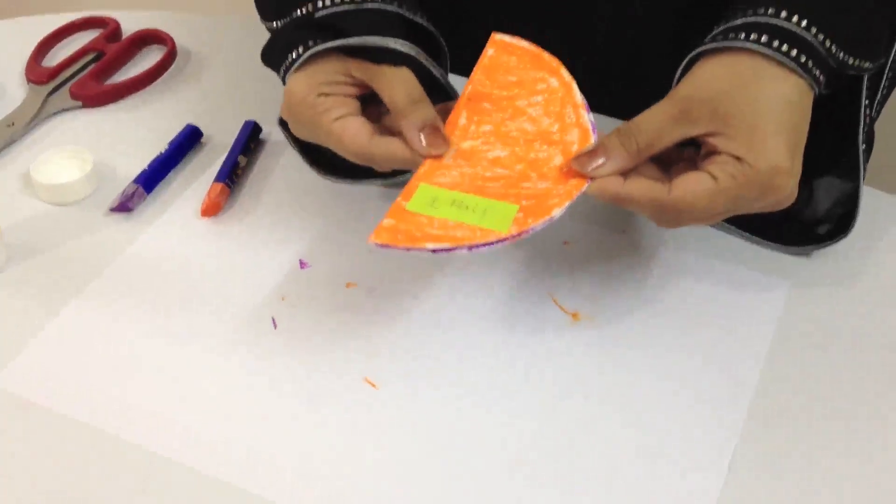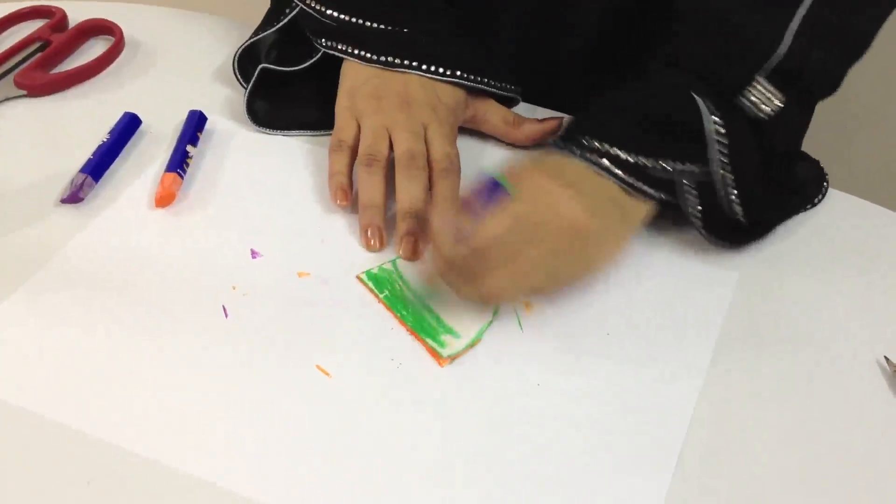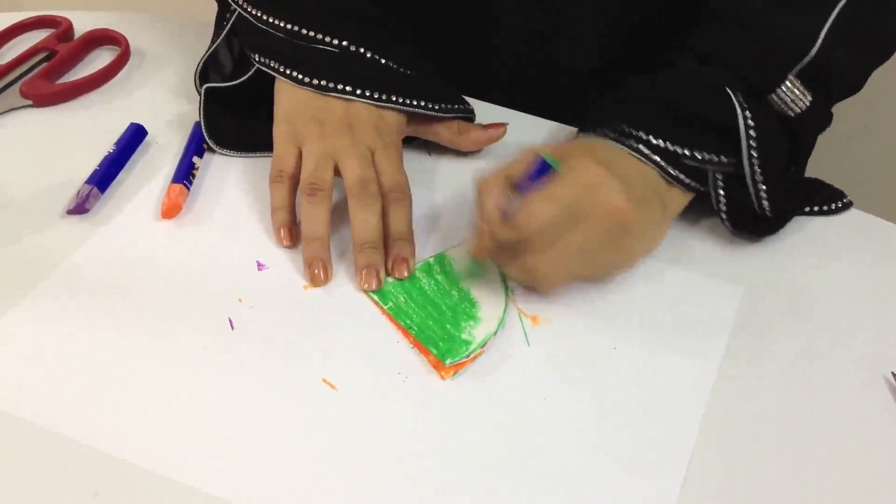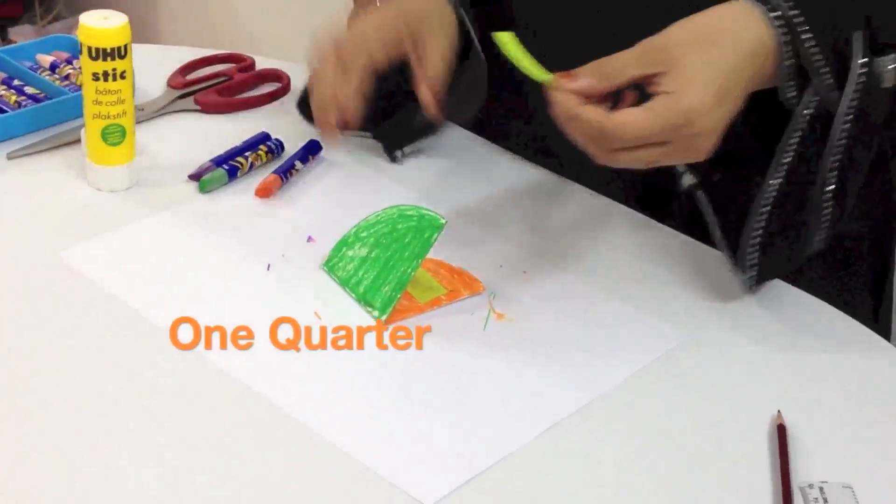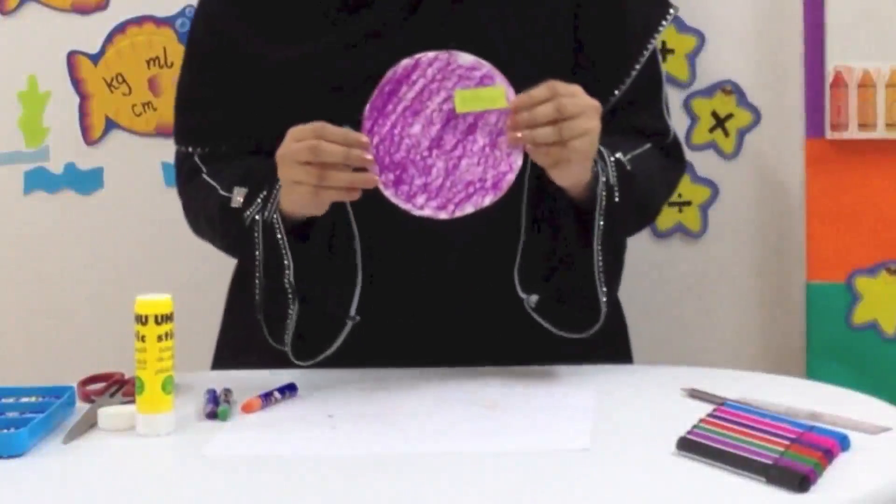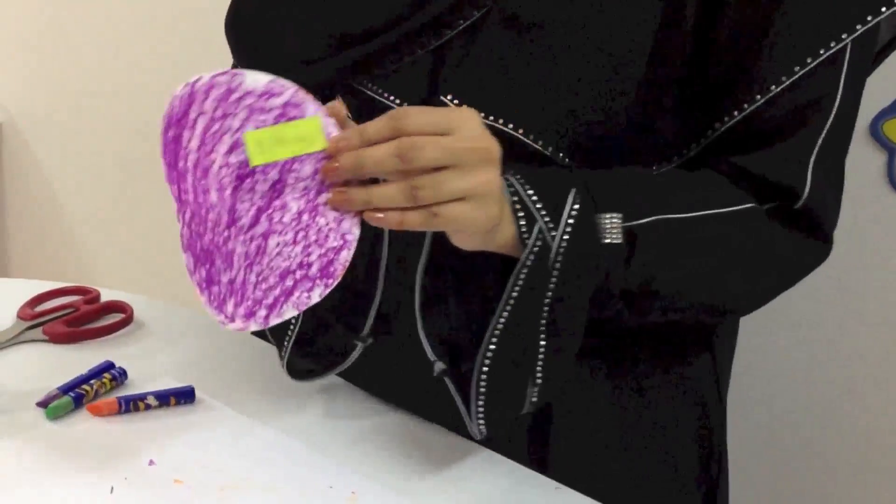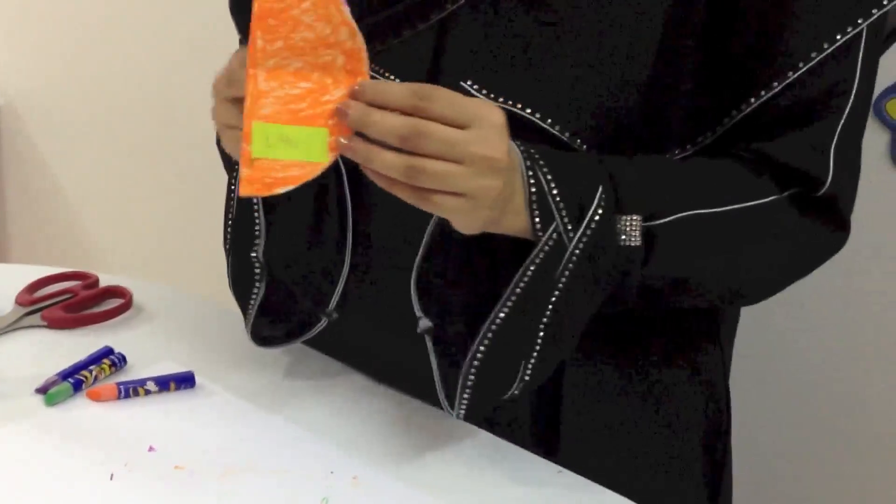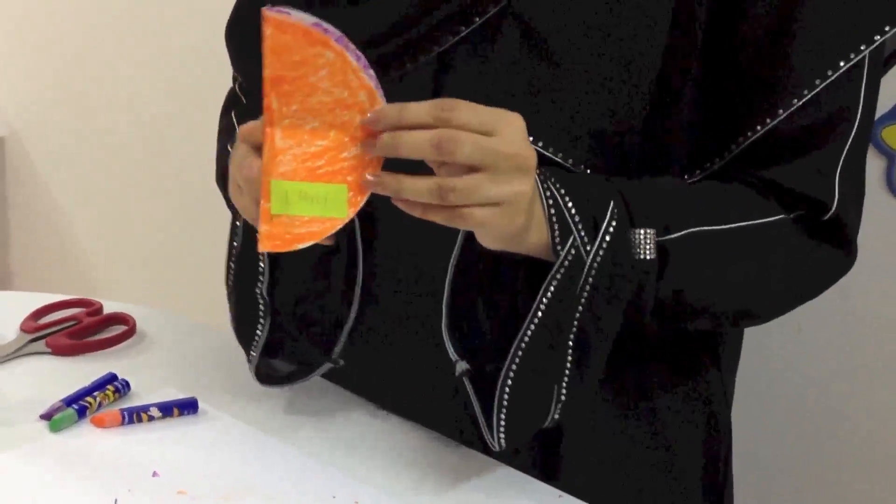We have labeled it. Now we fold the semicircle in half and color the other side. We have one quarter of a circle. Now this is one whole of a circle, and when we turn the other side we see one half and one quarter.